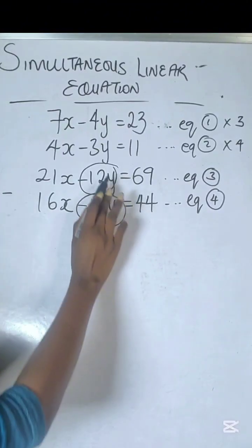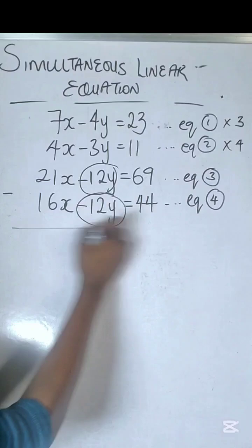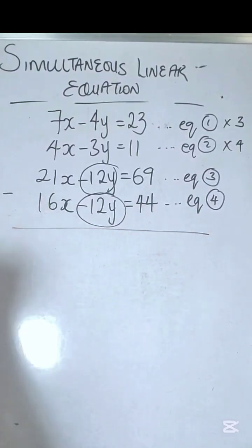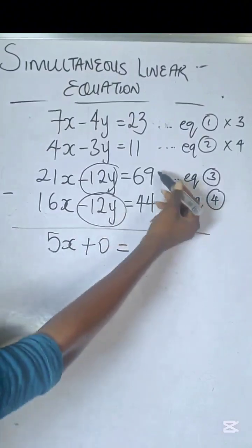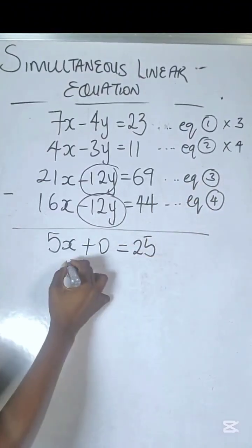So 21x minus 16x is 5x. This becomes zero, so you could write plus zero or nothing at all—it doesn't matter. 69 minus 44 is 25, therefore you have 5x = 25.